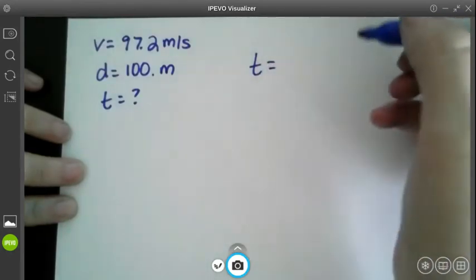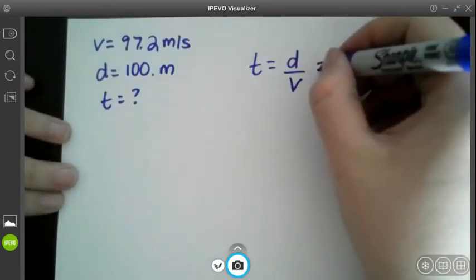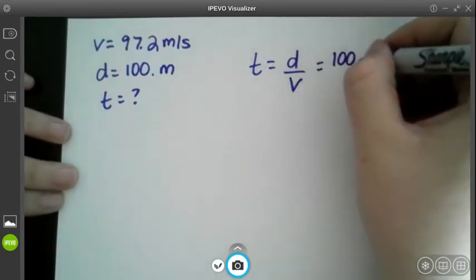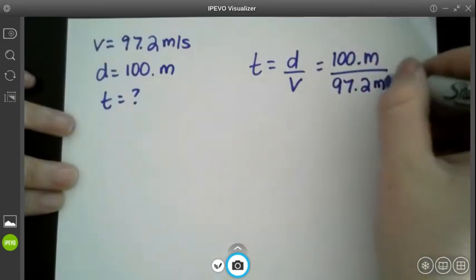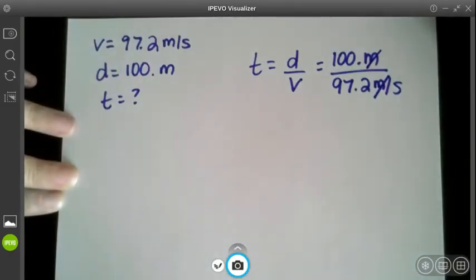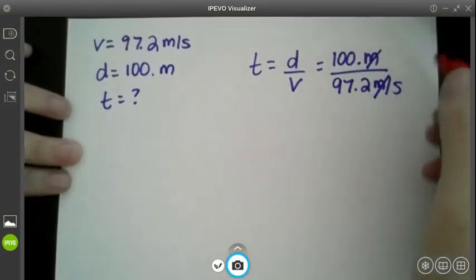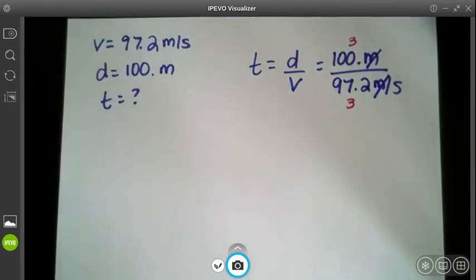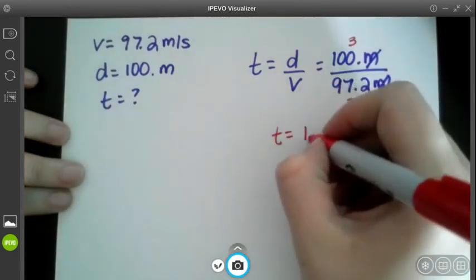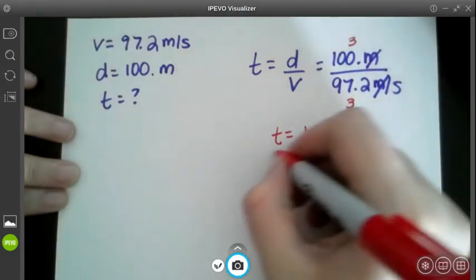So t is going to be distance over velocity. So I'm going to plug in my numbers, 100 meters divided by 97.2 meters per second. And I cancel out my units, so my correct units are going to be seconds that are left over. I have 3 sig figs here, 3 sig figs here, so my answer should also have 3 sig figs. And when I put this in the calculator, I'm actually going to get 1.03 seconds. And that is my final answer.